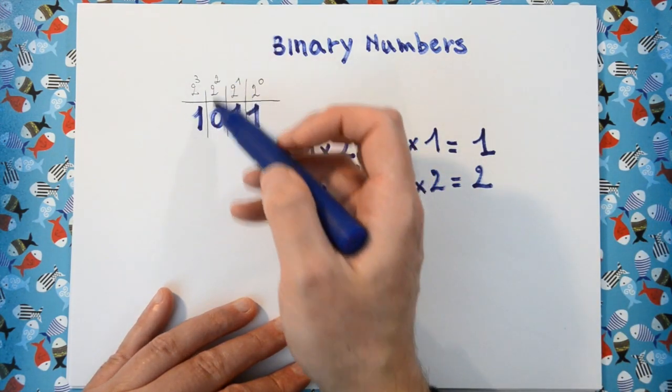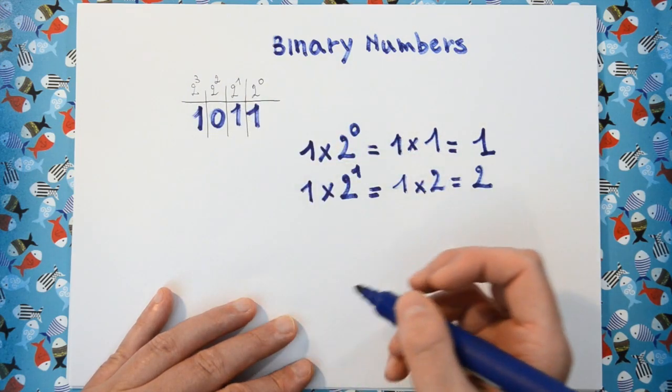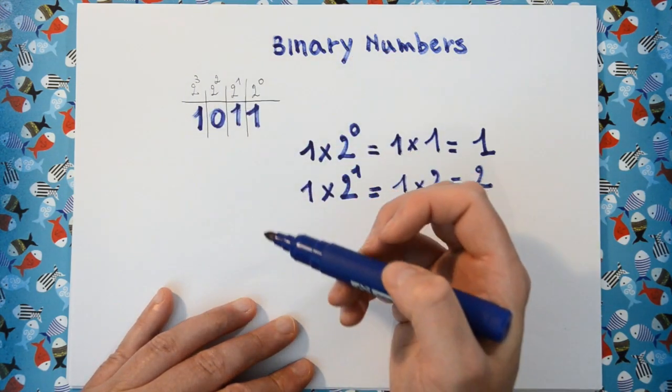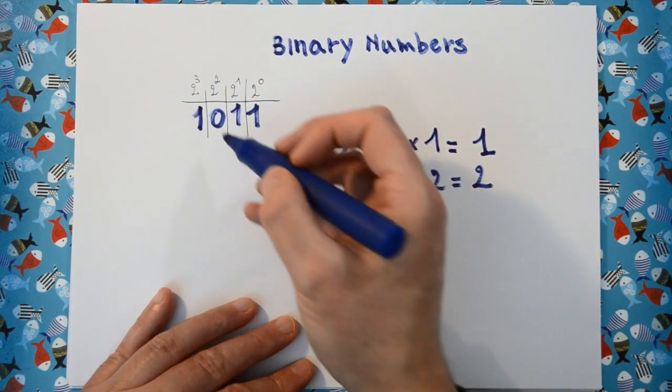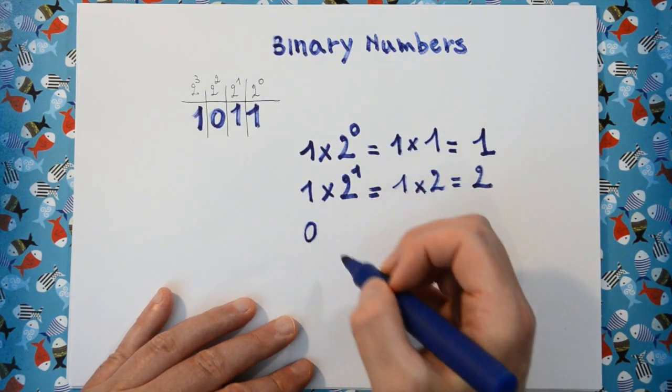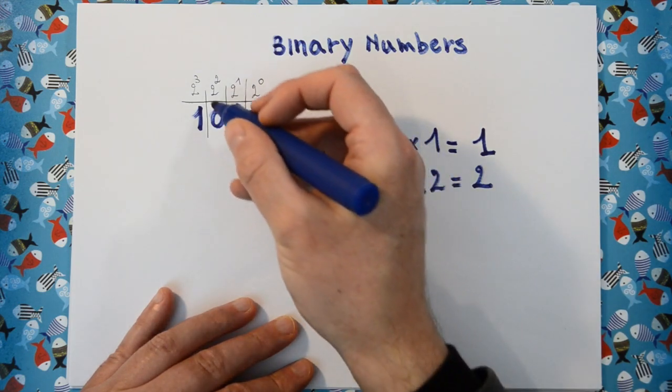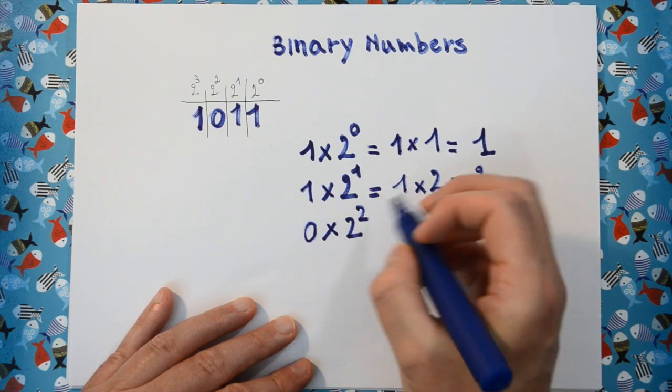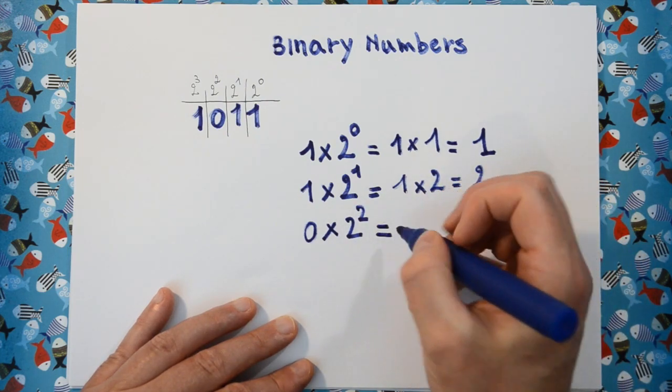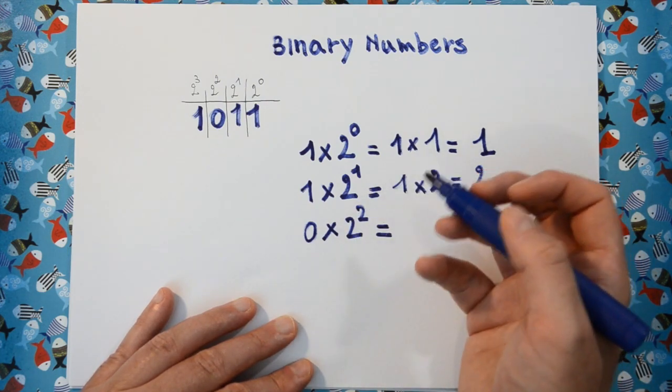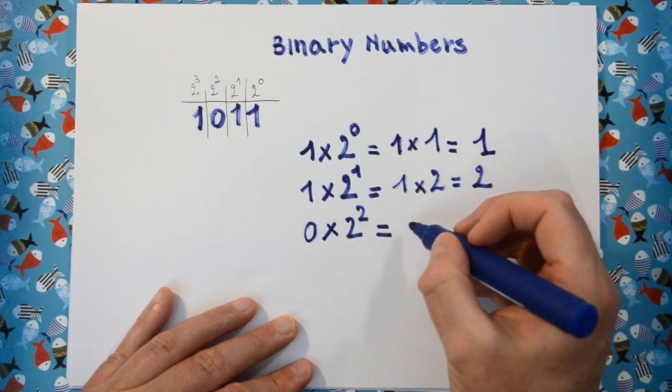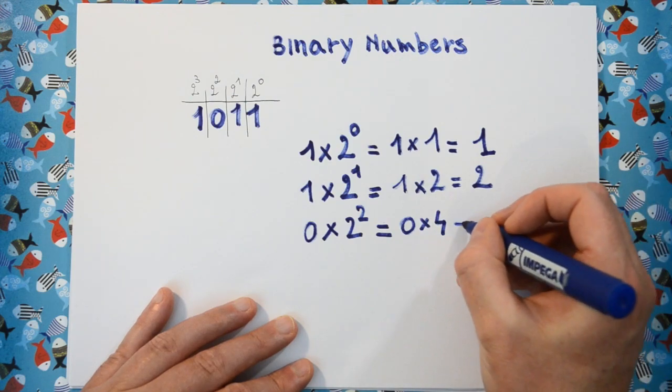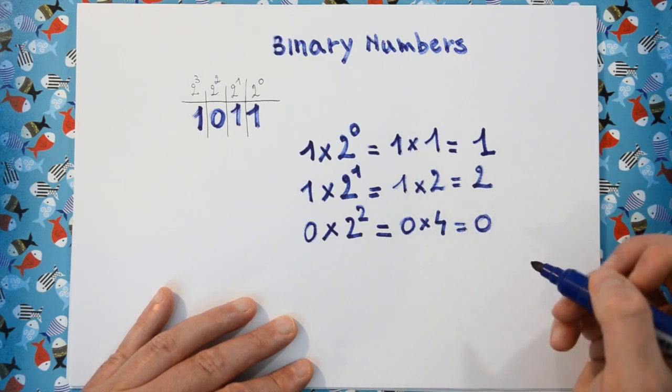The third bit or the third column in this binary number stands for how many times we have 2 to the power of 2. So the symbol here is 0. We have 0 times 2 to the power of 2, which is of course just 4 because 2 times 2 is 4. So we have 0 times 4, and this equals 0.